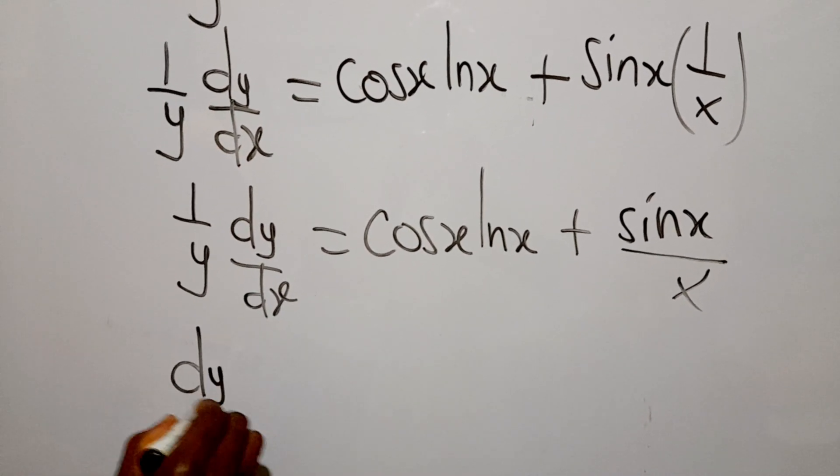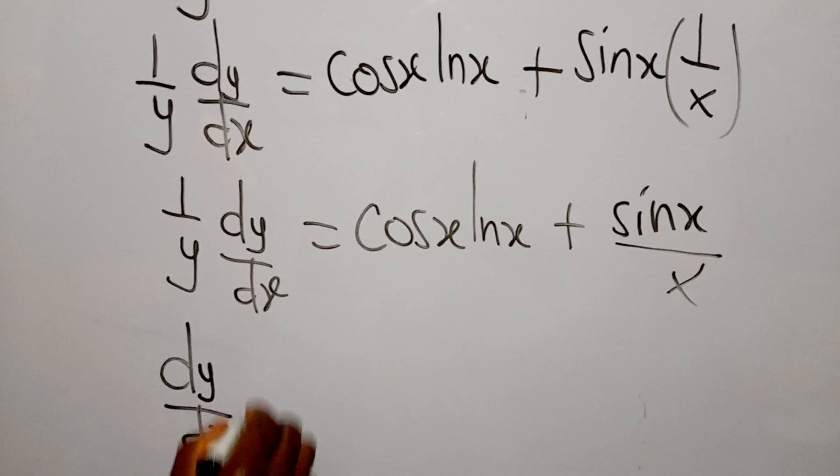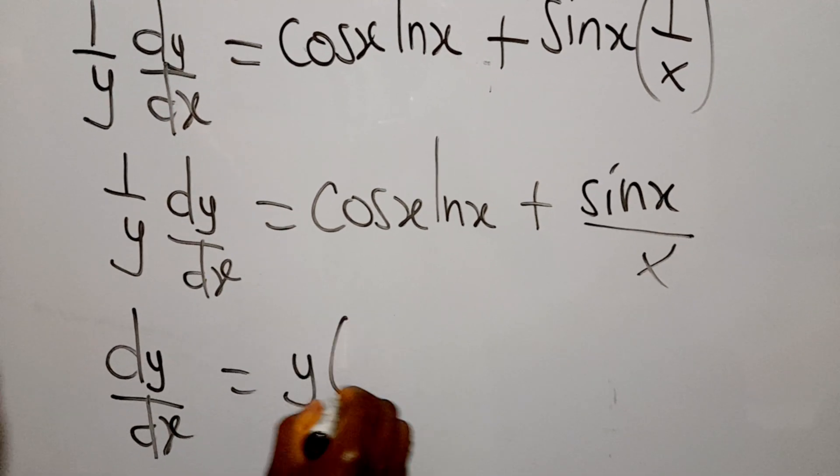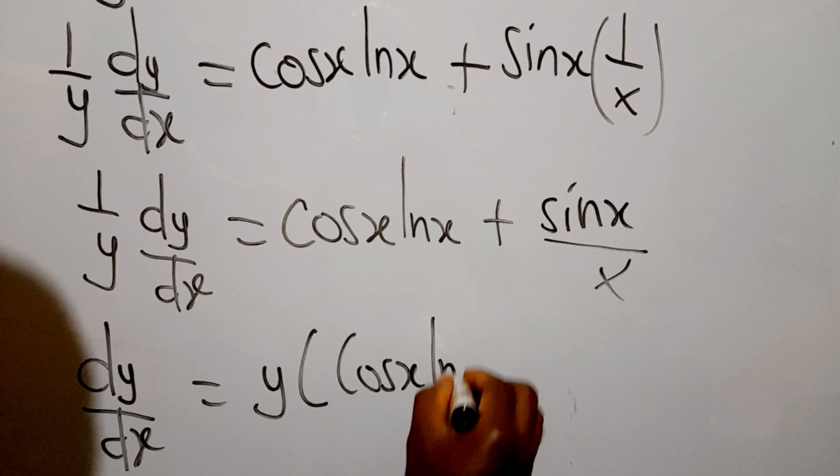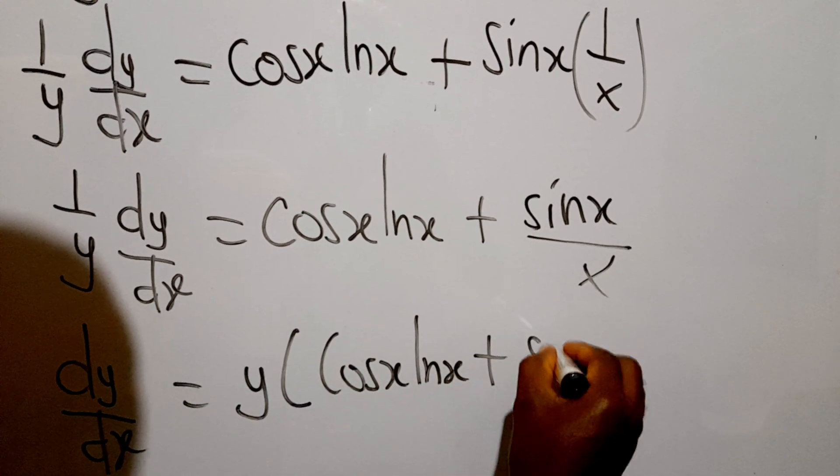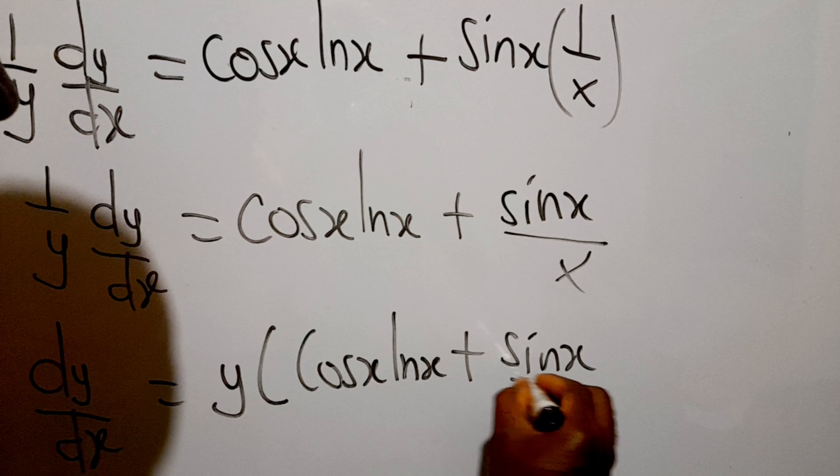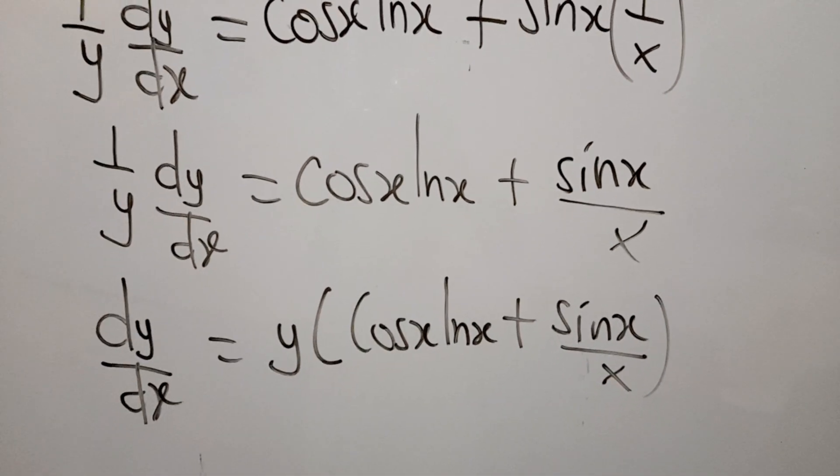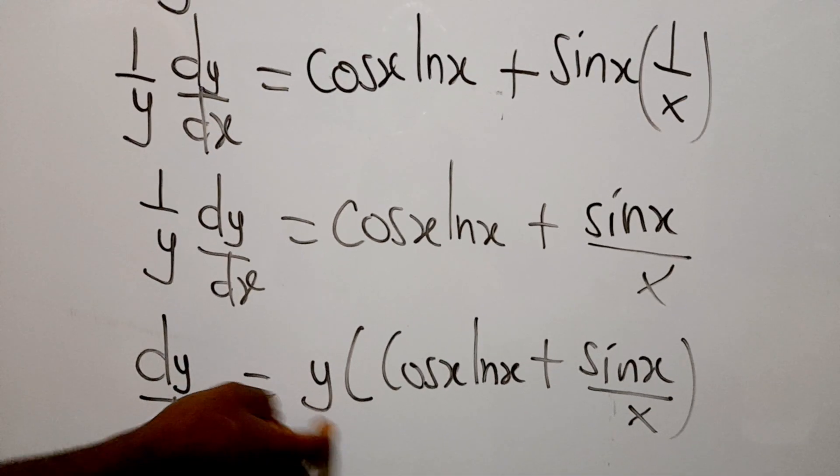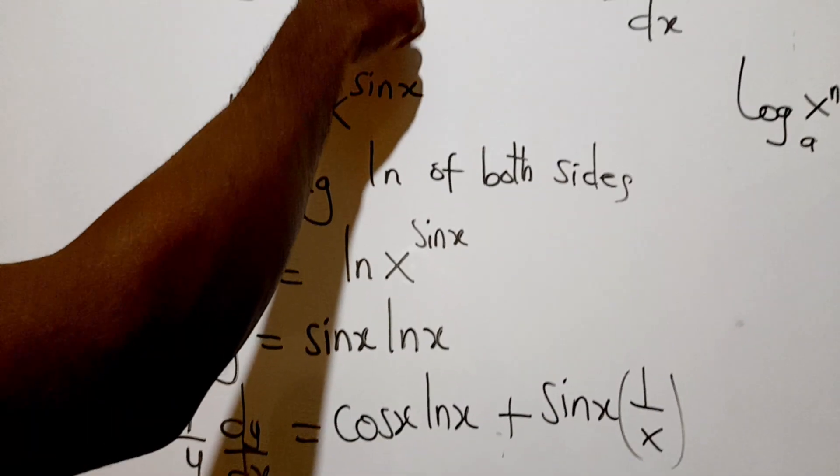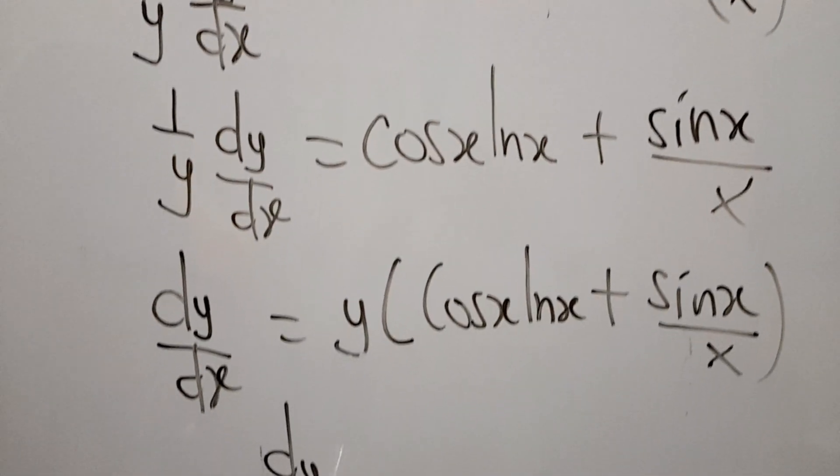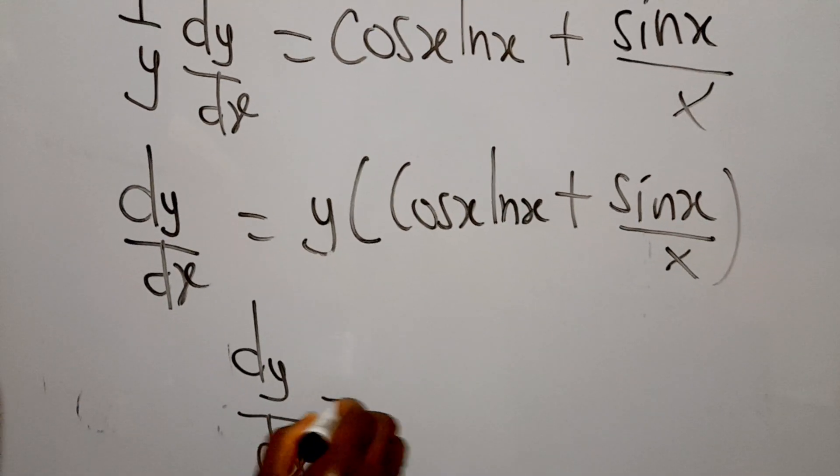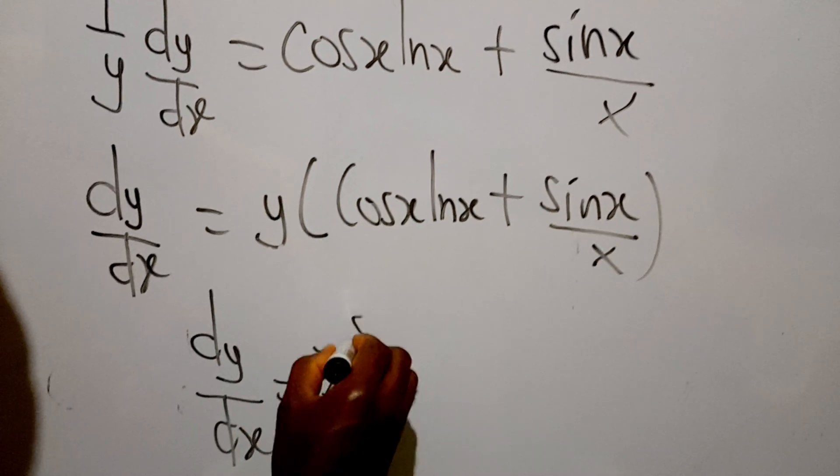So we can multiply through by y and say that dy/dx = y(cos x ln x + (sin x)/x). However, we know our y to be x^(sin x), so we can replace and say that dy/dx = x^(sin x)...